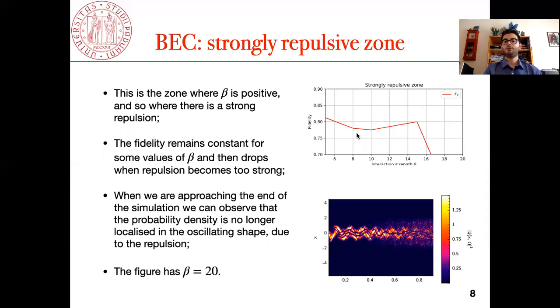Then we can see the strongly repulsive zone, and we can see that the fidelity remains almost constant for some values of beta and then drops where the Bose-Einstein condensate approximation is no longer valid because the interaction is too strong. We see here the graph for beta equal 20 of the probability density and we lost the oscillating behavior due to the strength of the interaction.